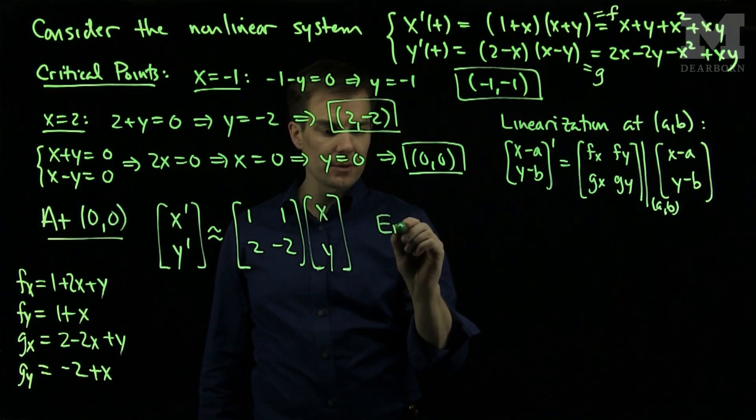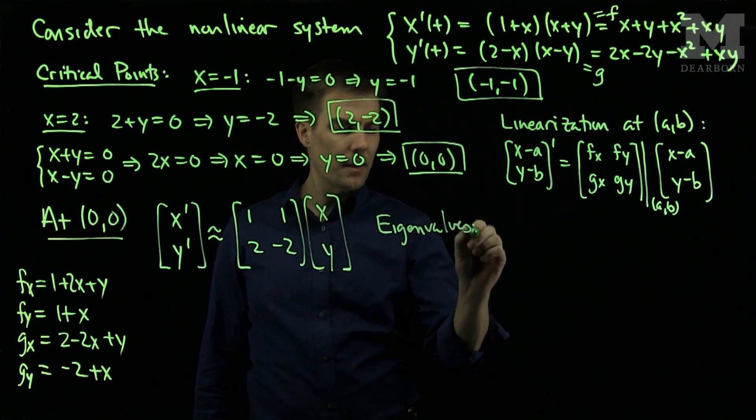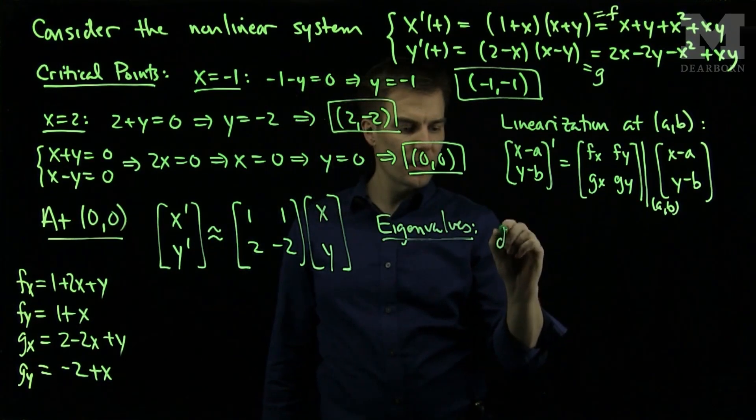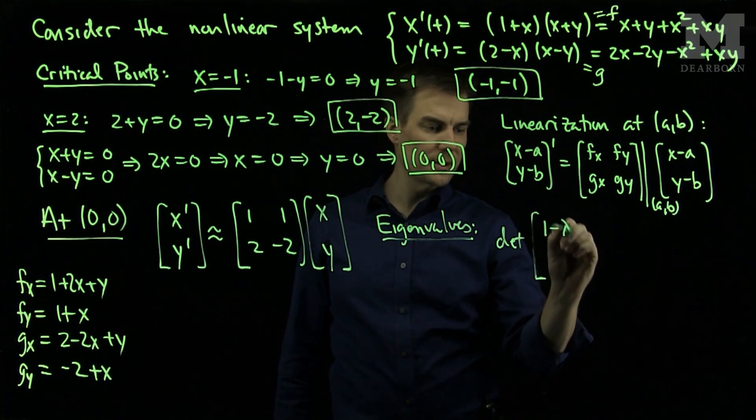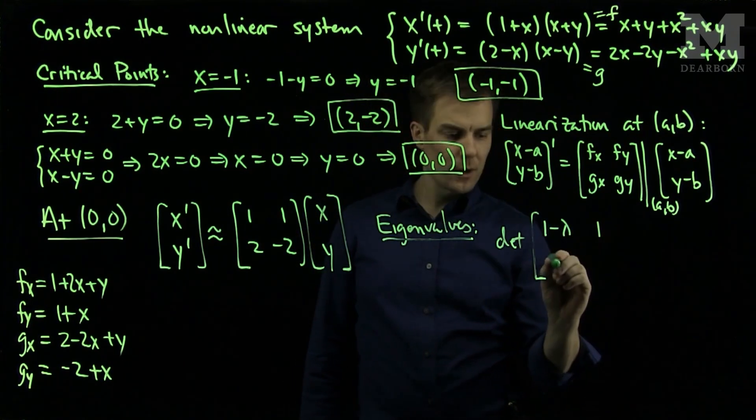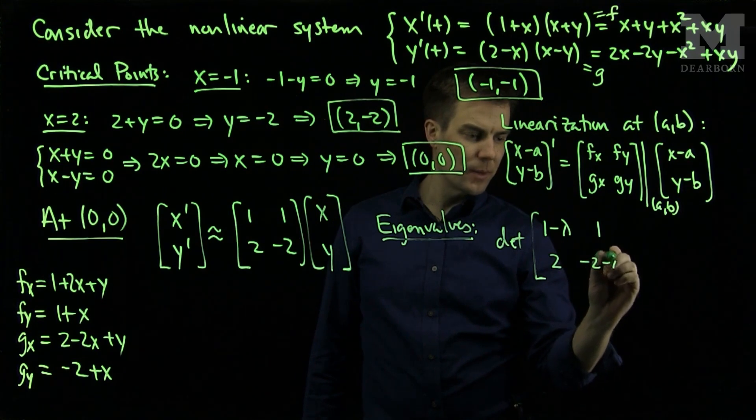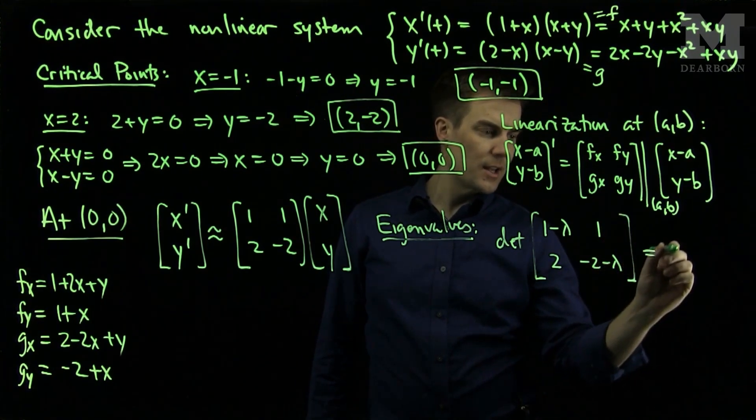The eigenvalues are found by computing the determinant of our matrix 1 minus lambda, 1, 2, negative 2 minus lambda, and setting that equal to zero.